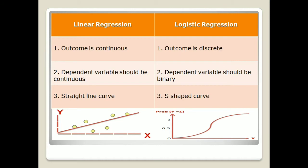The first difference is that in linear regression the outcome is always continuous — based on one value, another value is calculated, so it is a different value each time. Whereas in logistic regression the outcome is discrete; it may be binary, zero or one, spam or not spam. Because the outcome is discrete, the dependent variable is always continuous in linear regression, whereas in logistic regression the dependent variable is always binary — zero or one, yes or no, spam or not spam, fake or true.